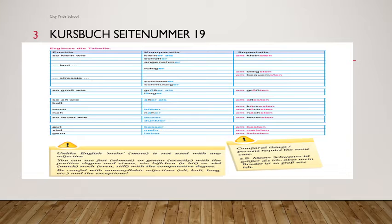Kalt: kälter als, am kältesten — once again -ESTEN is added. Then kurz: zo kurz wie (without umlaut), kürzer als (with umlaut), am kürzesten — because it ends with Z, so -ESTEN is added.